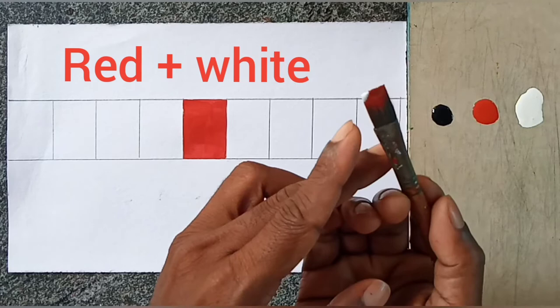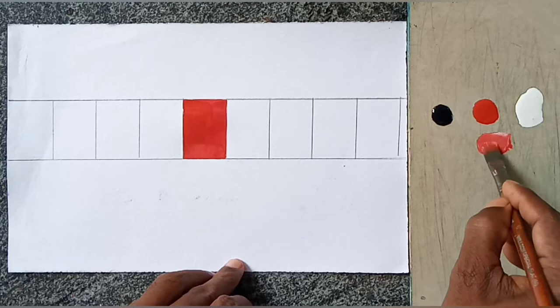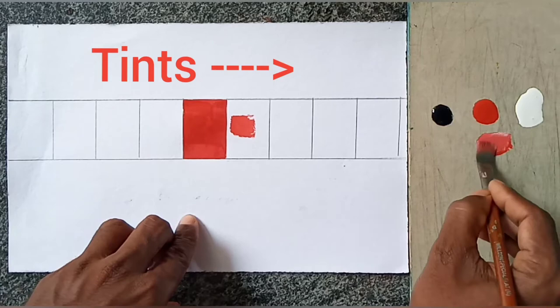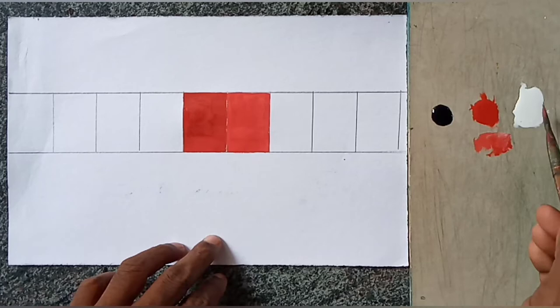Now want to make tint. So you want to add red and white color together for tint. Little bit white, take and mix together. Little bit white and some red color. See the difference.